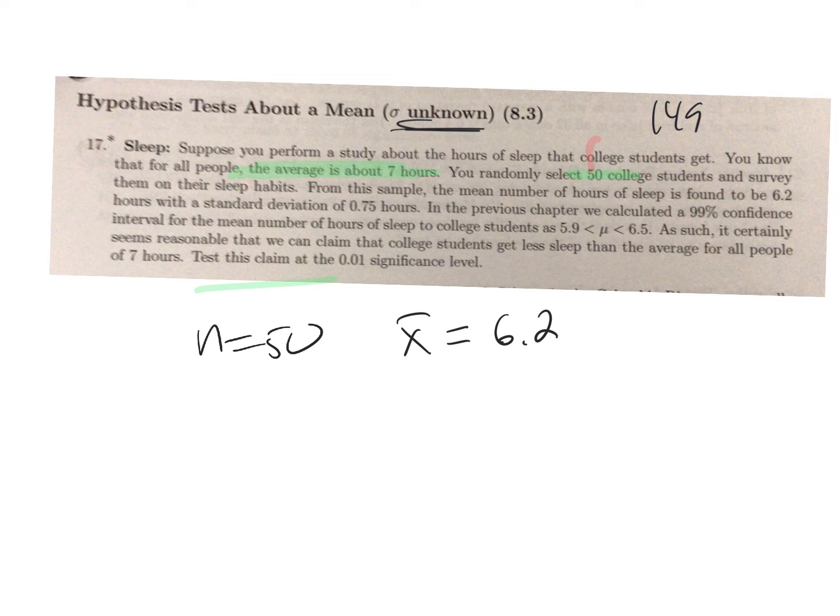We know the sample standard deviation is 0.75 hours, so that's s. That's a flag that we don't know the population standard deviation, this comes from the sample. They don't tell us whether the population is normally distributed, but because we have such a large sample size we can apply the one sample t-test.